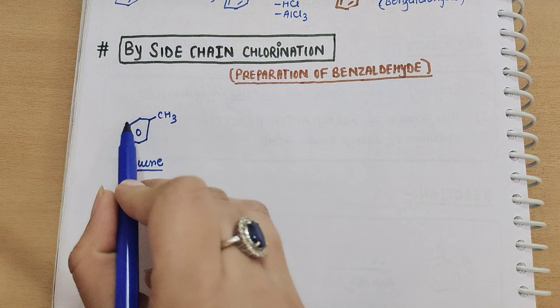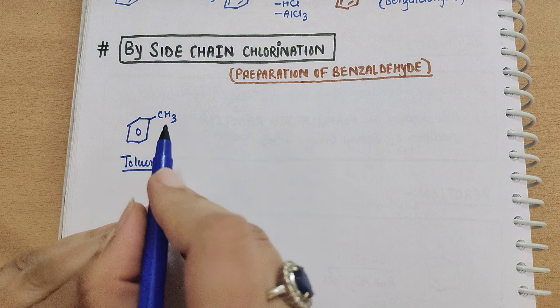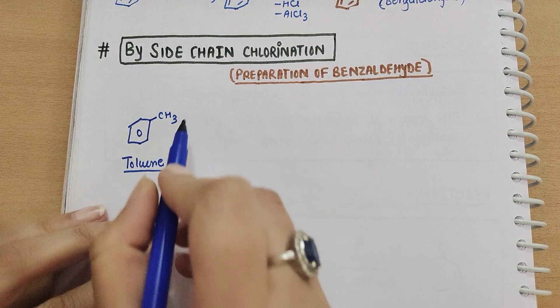If it is CH3, that will be toluene. So side chain chlorination means that the aromatic group is on the side chain and we have chlorination.